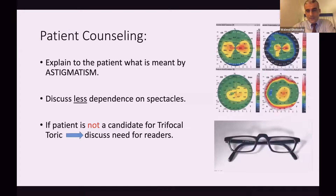Patient counseling is critical for correction of astigmatism with TORIC IOL selection. I find it much easier to show the patient his or her topography and explain what the bow tie pattern means. I give the patient the term 'less dependence on spectacles,' not 'freedom from spectacles.' And if the patient is not a candidate for trifocal TORIC, I'll discuss the need for readers later on.